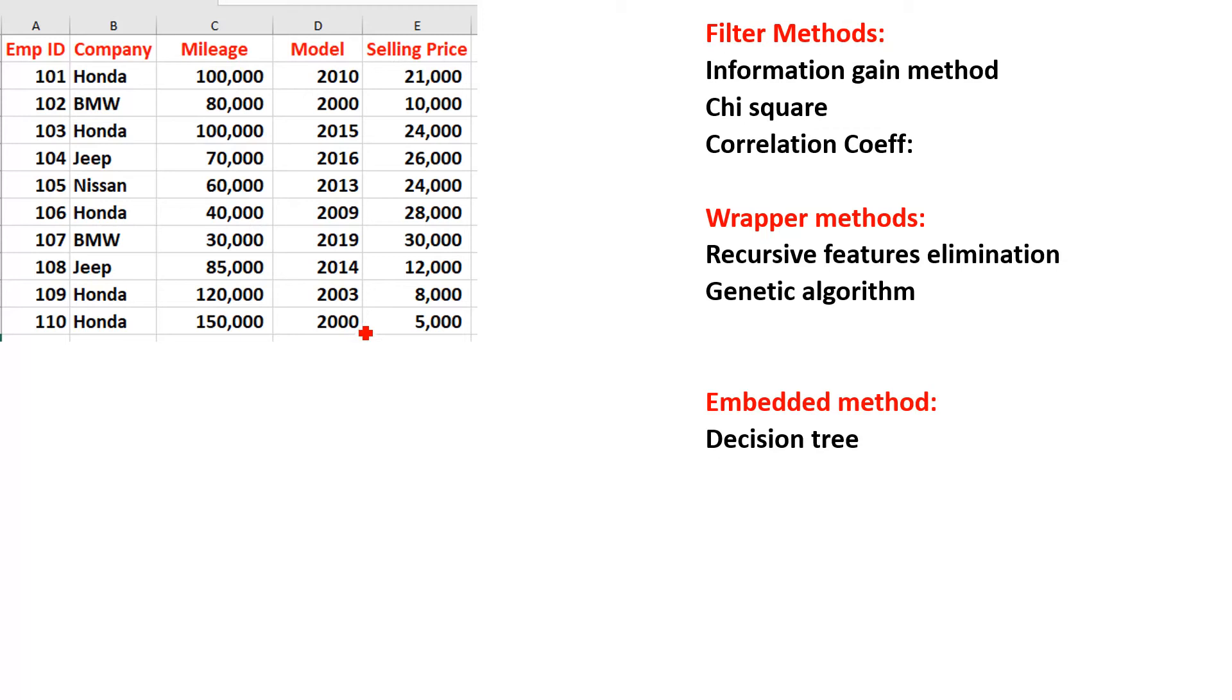I have made a very simple example for you. I have five different attributes: employee ID, company, mileage, model, and selling price. You can see that selling price depends on model, mileage, company, and employee ID.